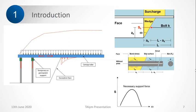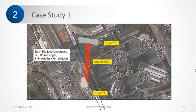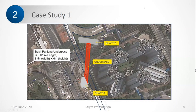Now I will talk about the case studies. Both case studies are from Singapore. Case study one is an underpass connecting shaft two to shaft three. There is a station here, and for the station to be operational, the client wanted pedestrians to come from one side so they don't have to cross the road. There would be an escalator so they can go down and take the underpass to come to the station.